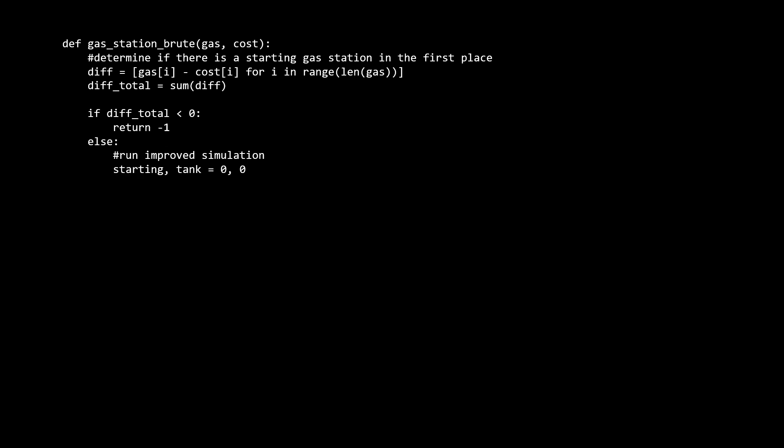Our improved solution follows the idea we just discussed. First, we have starting and tank variables, both starting out at zero, because we're going to start simulating with index zero as the starting point with zero units of gas in the tank. Then we run a for loop through the two lists, updating our tank the same way we did in our brute force solution. If at any point our tank falls negative, it means we fail to make a trip. So in that case, we move the starting point to I plus one and reset our tank to zero. And we continue simulating. And finally, when our simulation finishes, we return whatever the starting was on. And that's all there is for the code.